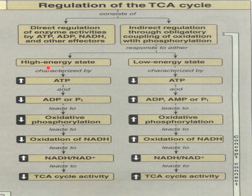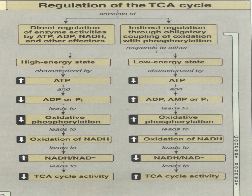In the high energy state, when ATP is increased, ADP and phosphate decrease. Oxidative phosphorylation decreases, oxidation of NADH reduces, and NADH increases. As the NADH/NAD+ ratio increases, TCA cycle activity is reduced. In the low energy state, ATP is reduced, ADP and AMP increase, oxidative phosphorylation increases, NADH is consumed, the NADH/NAD+ ratio decreases, and TCA cycle activity increases.